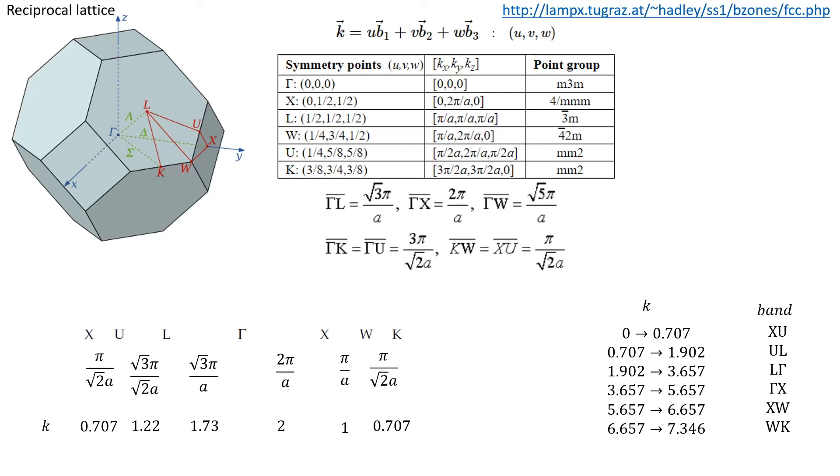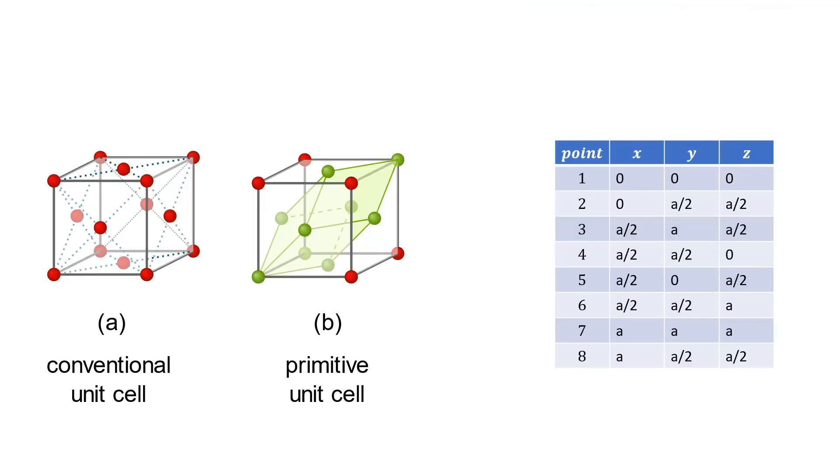The last thing before going to COMSOL and implementing this dispersion diagram, we need to show what is the difference between a conventional unit cell, which is this one on the left here, and the primitive unit cell on the right. The primitive unit cell, which is drawn by this shadowed green color, actually has volume one-fourth of the total volume of the conventional unit cell.